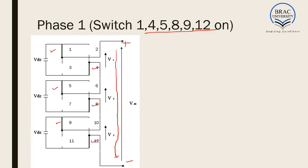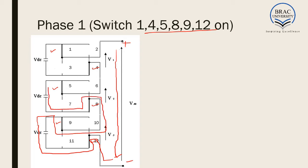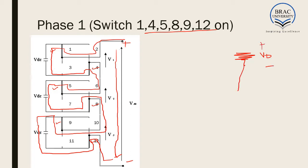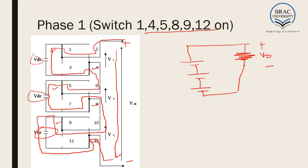Current flows from plus to minus in this direction through the output. After that, it comes through this direction and reaches the first VDC from minus to plus. Then again through this direction it reaches another VDC, and then again through this direction it reaches another VDC, and finally reaches the output. So all three VDC sources are in the current path, giving V output equal to 3VDC.